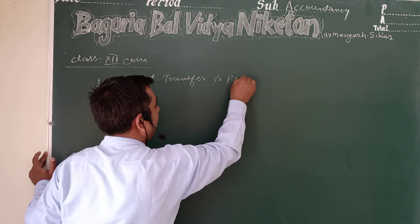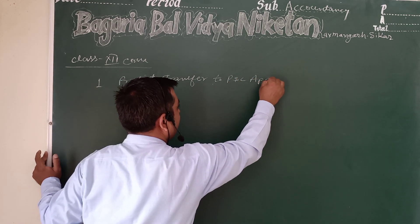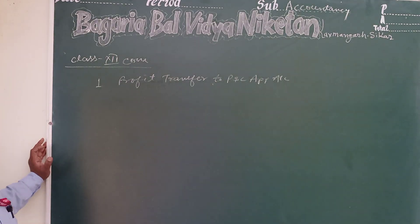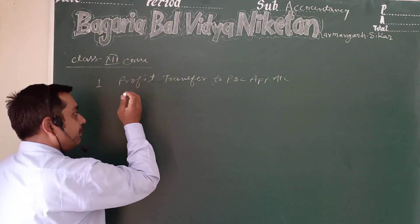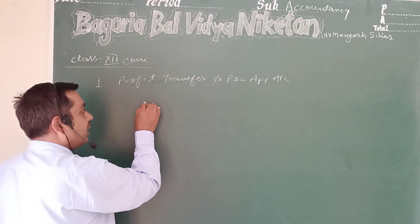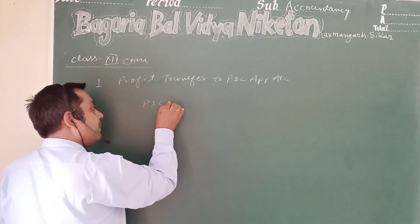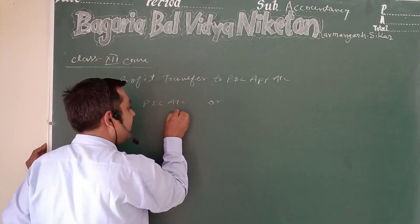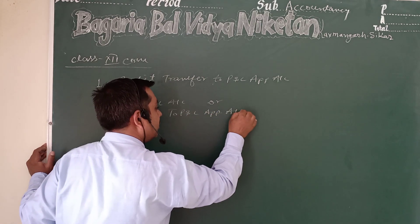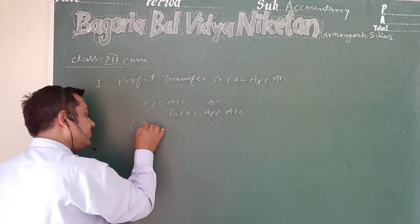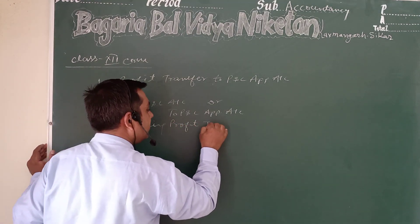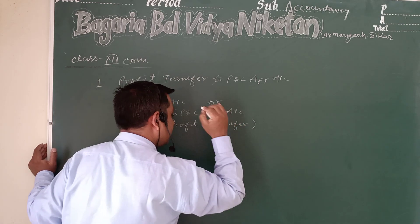The first entry is to transfer profit to the P&L Appropriation Account. When the net profit balance is transferred from the Profit and Loss Account, the entry is: P&L Account debit to P&L Appropriation Account. The narration would be: being net profit transferred to P&L Appropriation Account.